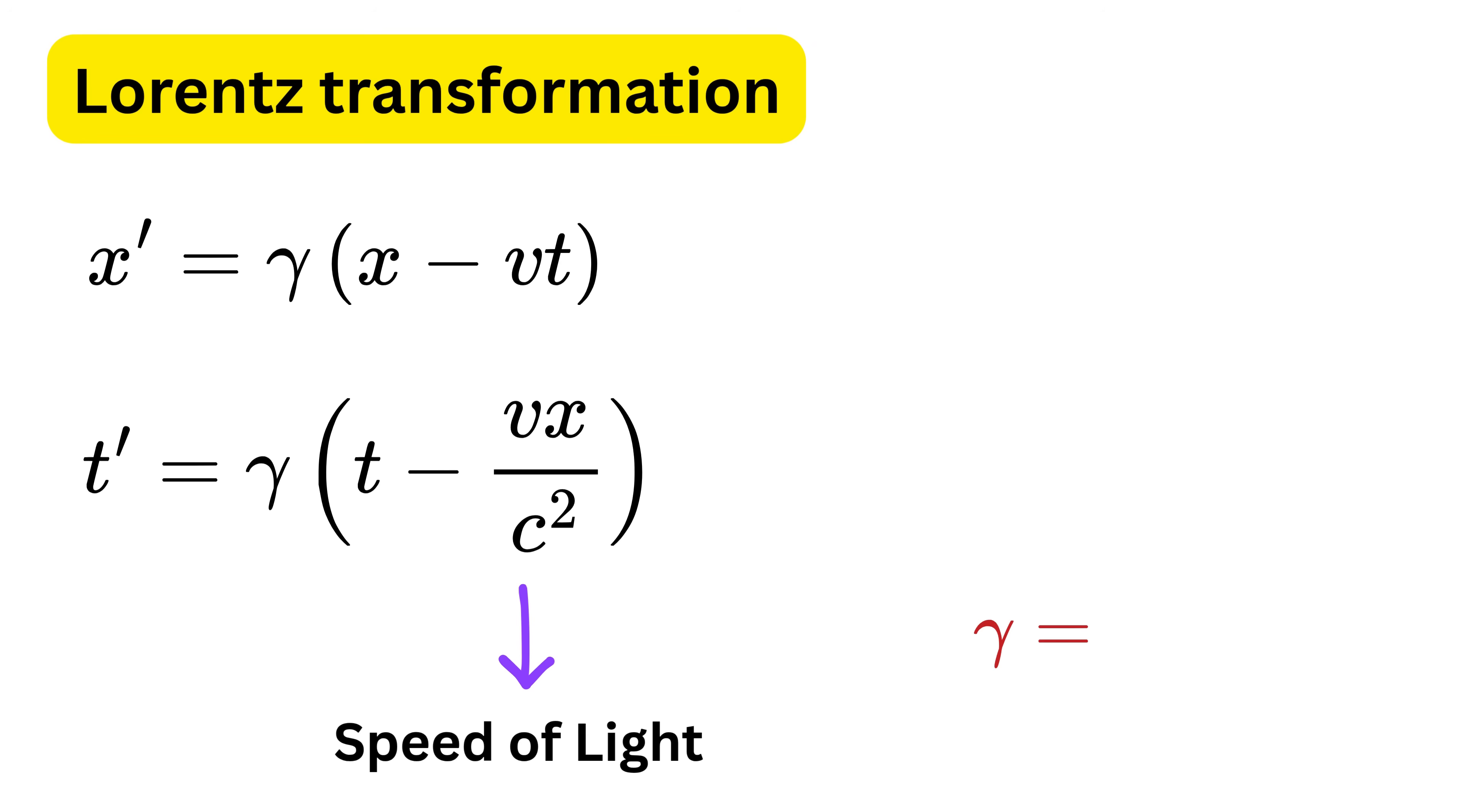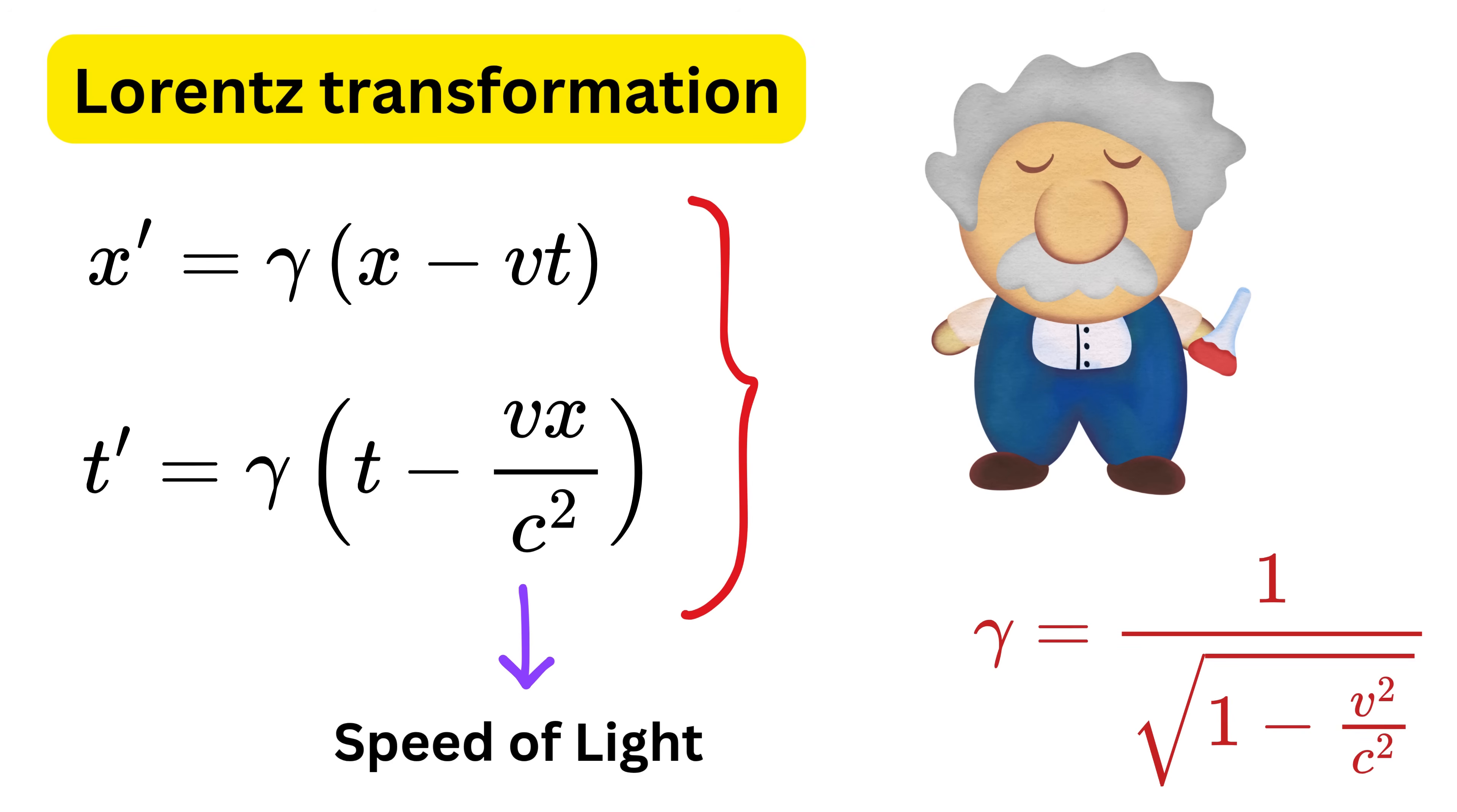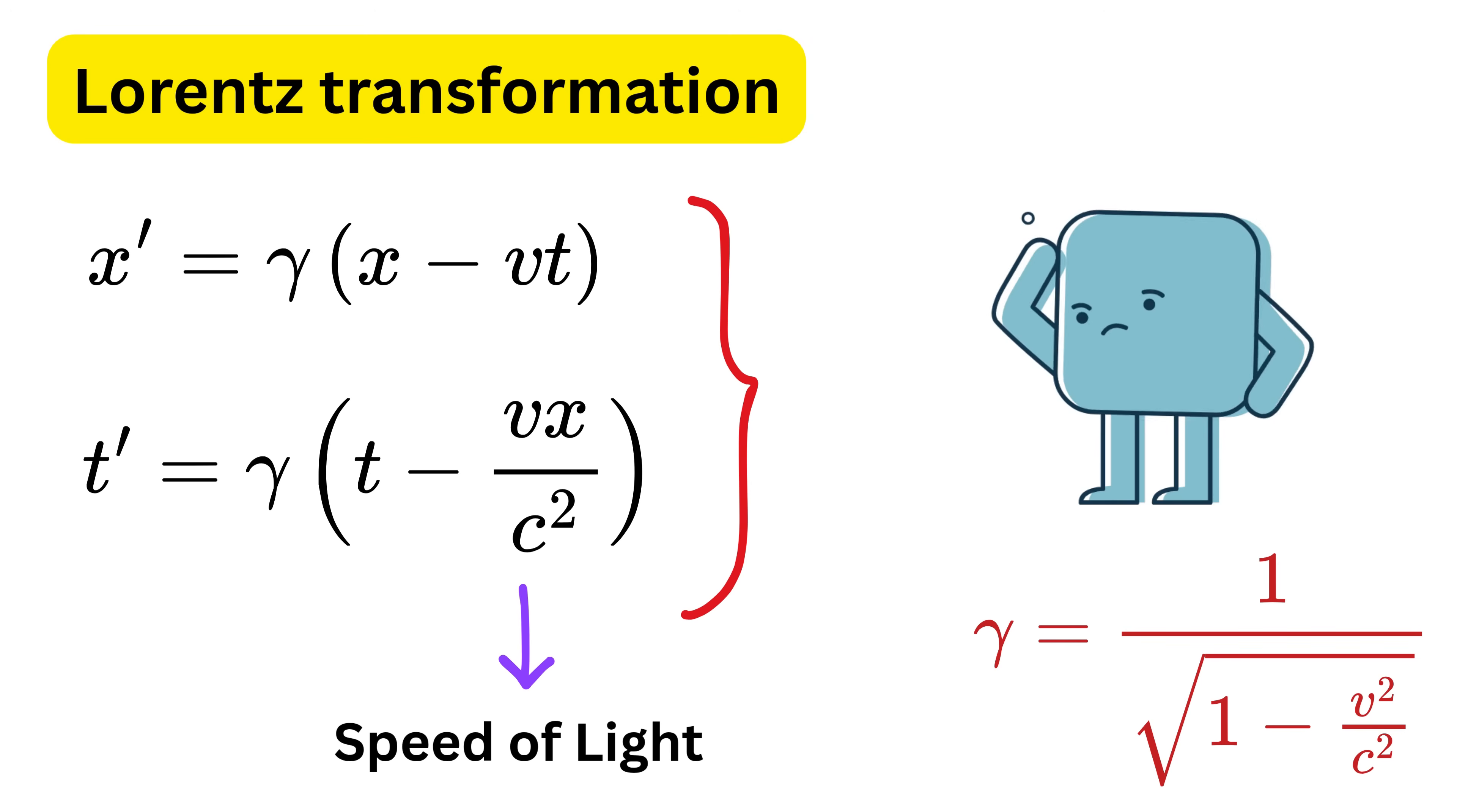And gamma, also called the Lorentz factor, is equal to one divided by the square root of (one minus v squared over c squared). So if you truly understand these two equations, then you've understood the heart of special relativity. Now what can we do with these two equations? Let us see.